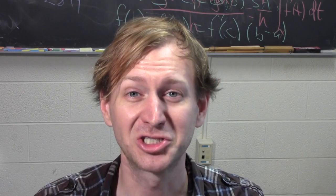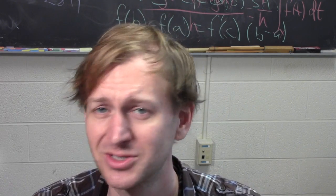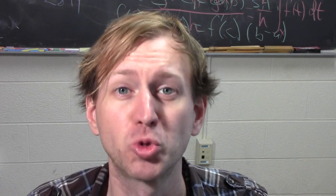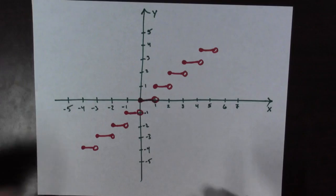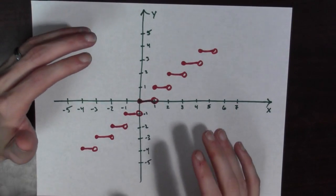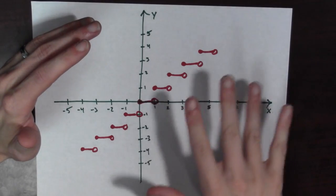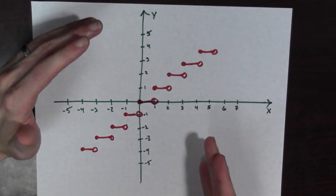So, any function from the real numbers to the real numbers can be plotted. Let's go ahead and plot the Greatest Integer Function. So, here we have a plot of the Greatest Integer Function. Let's see if we can explain why the plot looks the way it does.